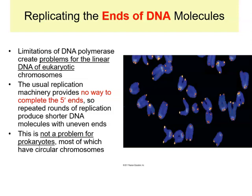Let's talk about how the ends of DNA molecules are replicated. Eukaryotic cells have linear DNA molecules, while prokaryotes have circular DNA. So none of this is going to apply to prokaryotes, because they have circular chromosomes and we won't be dealing with any issues replicating the ends of DNA. But we will have a problem with DNA in eukaryotic cells.